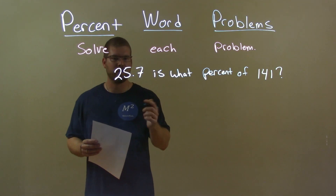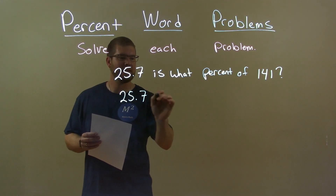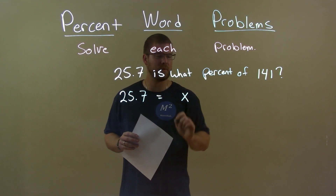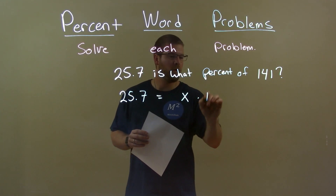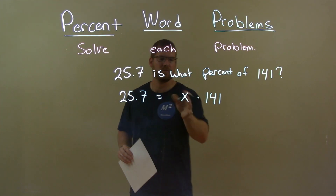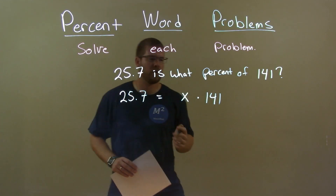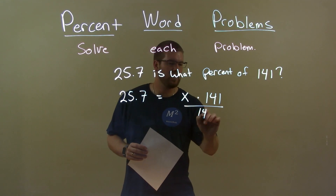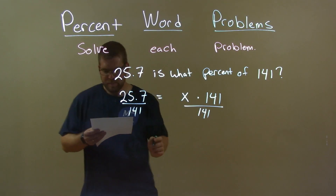Let's write this as an equation. 25.7 is what percent — x, which we need to find — of 141. Let's do multiplication right there. Now, we're going to solve for x. I divide both sides by 141 to get x by itself.